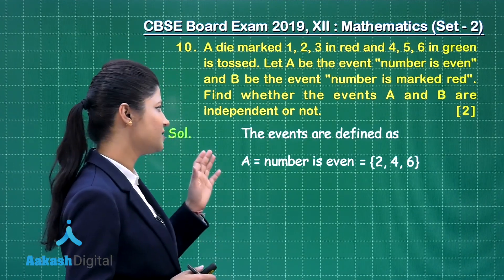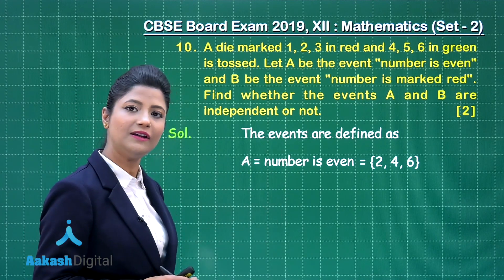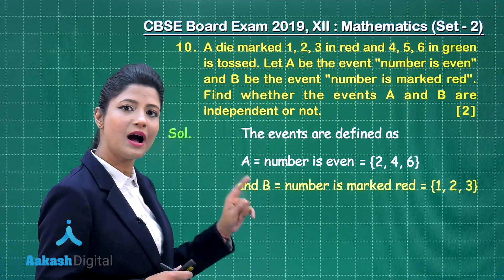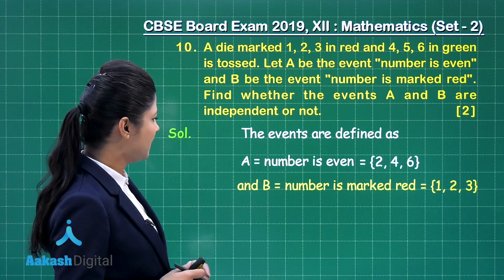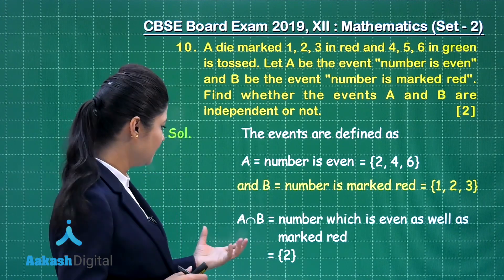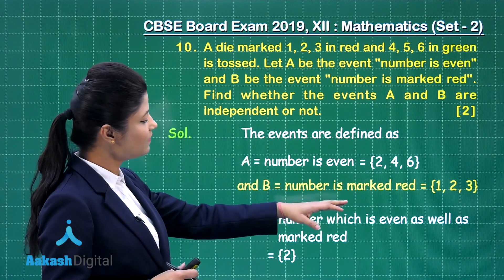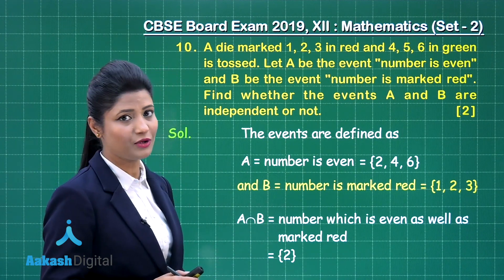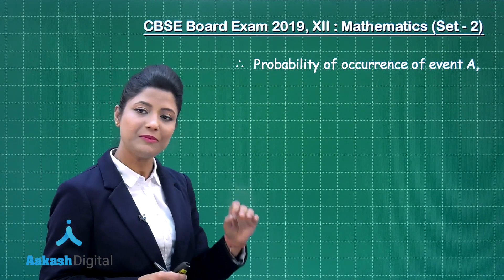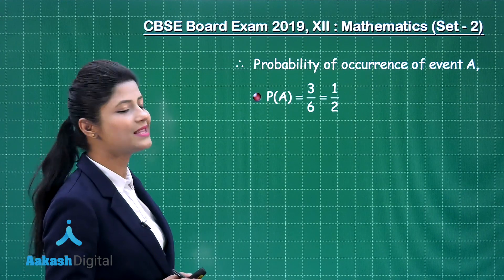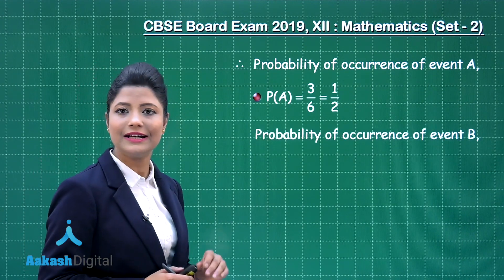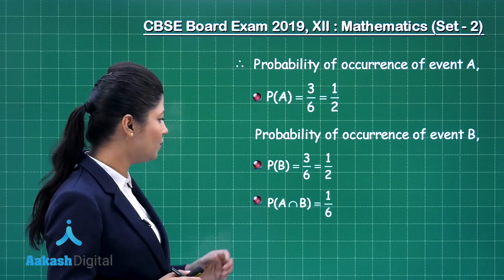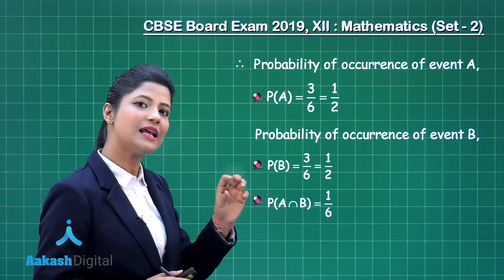Event A (even number) = {2, 4, 6} and event B (red number) = {1, 2, 3}. The intersection A ∩ B (even and red) = {2}. So P(A) = 3/6 = 1/2, P(B) = 3/6 = 1/2, and P(A ∩ B) = 1/6.